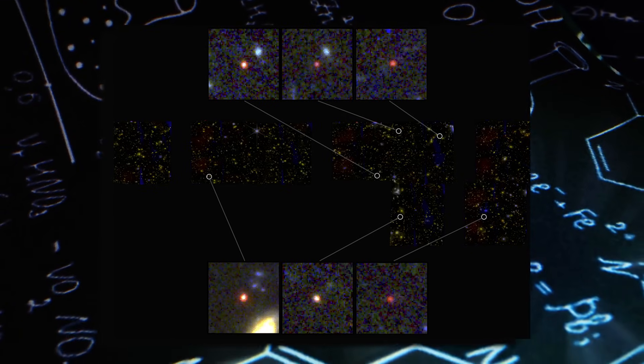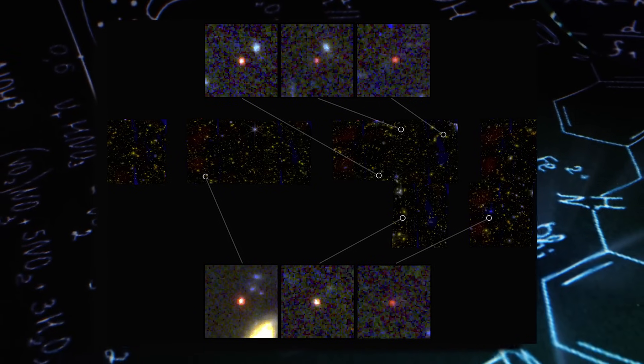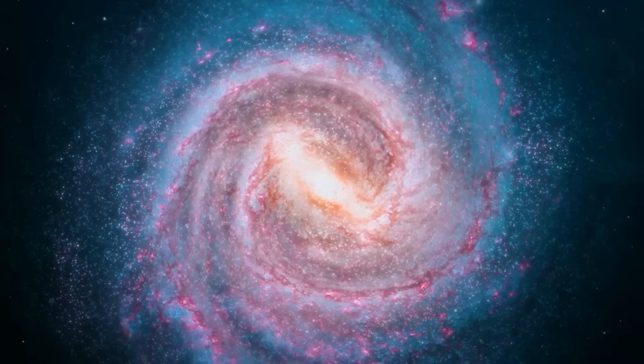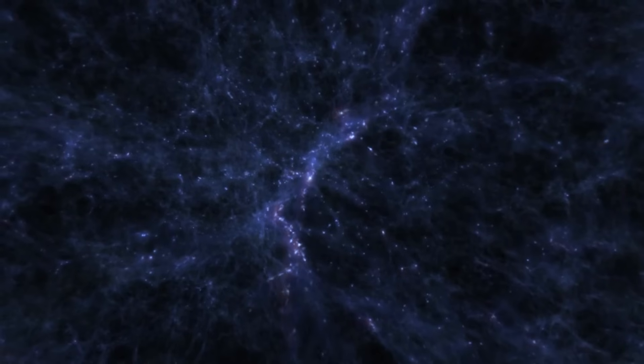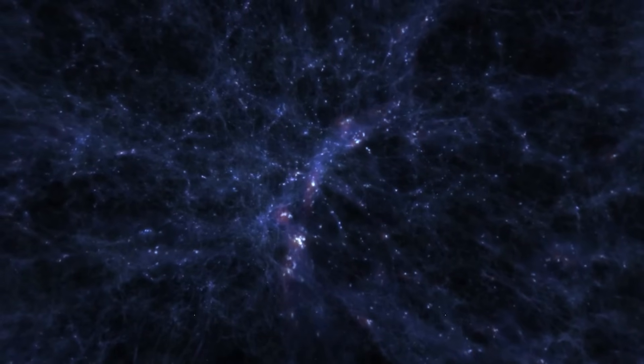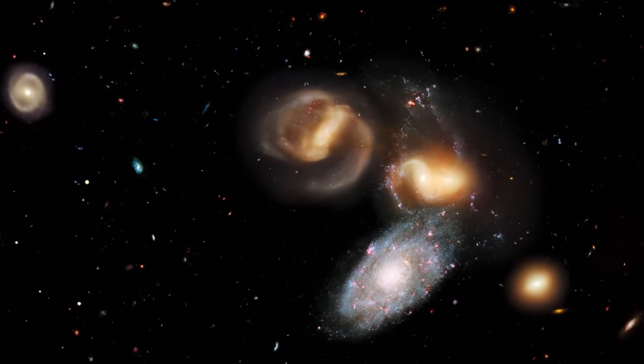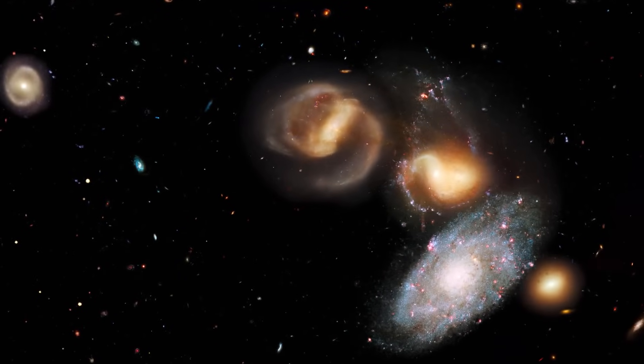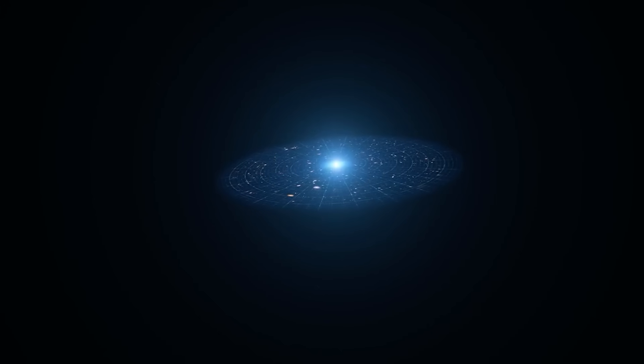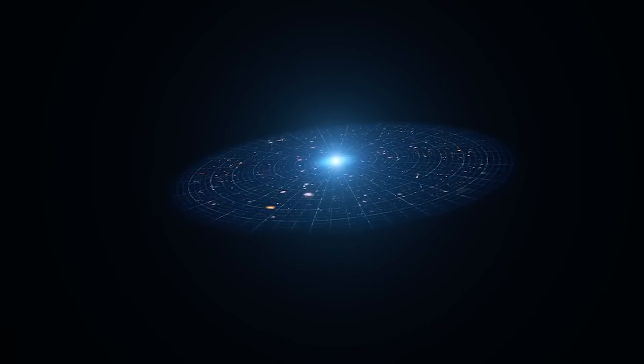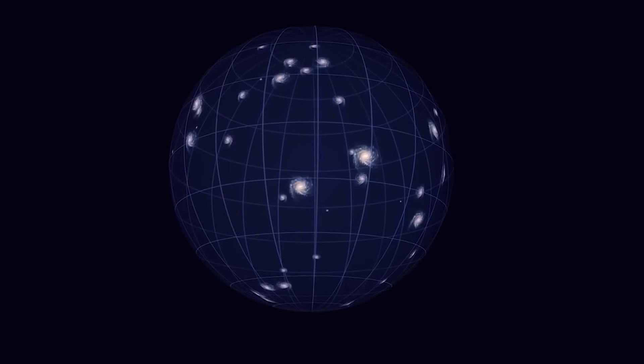However, the James Webb Telescope's identification of six galaxies emerging a mere half a billion years after the Big Bang, surpassing the Milky Way's size by up to 10 times, disrupts this understanding. Typically, galaxies transform approximately 10% of their gas into stars, yet these newfound galaxies challenge this norm by seemingly converting nearly their entire gas reservoir into stars. This departure from expectations prompts the need for further scrutiny to unravel the mysteries surrounding their ages and masses.